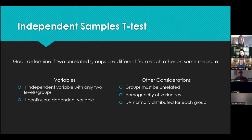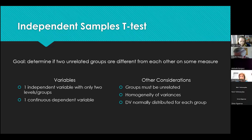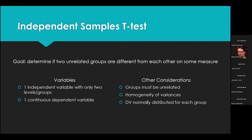Other things to consider: the groups have to be unrelated, so there can't be any connection between people in the groups. Homogeneity of variances is an assumption of the test — basically it means the variability in each of your groups is similar. The dependent variable must be normally distributed for each group — not just by itself, but based on grouping.